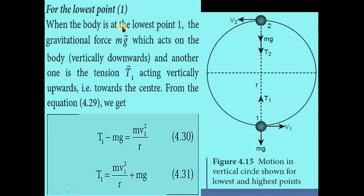The tension and velocity at these two points can be found by applying the law of conservation of energy. At the lowest point 1, the gravitational force Mg acts vertically downward and the tension T1 acts vertically upward towards the center. So T1 minus Mg equals MV1 squared divided by R. Rearranging: T1 equals MV1 squared divided by R plus Mg.